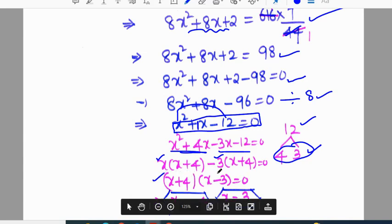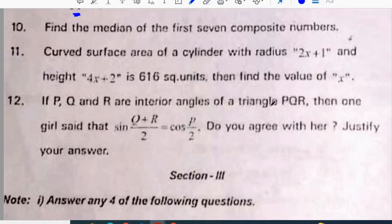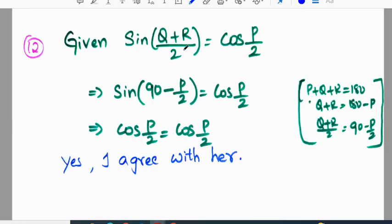If P, Q, R are interior angles of a triangle PQR, then one girl said that sin of (Q plus R) by 2 equals cos P by 2. Do you agree with that? Sin (Q plus R) by 2 equals cos P by 2. It can be expressed as sin (90 minus P) by 2, because P, Q, R are the three angles of a triangle. Sin (90 minus P by 2) will become cos P by 2, which equals cos P by 2. Yes, I agree with that.